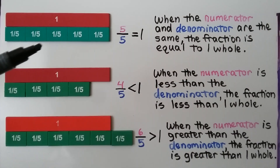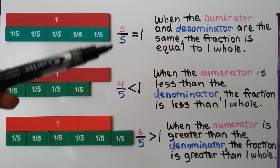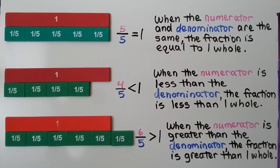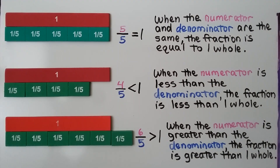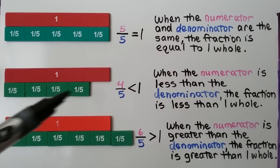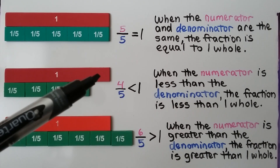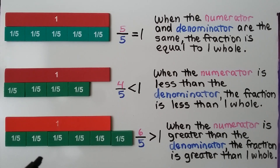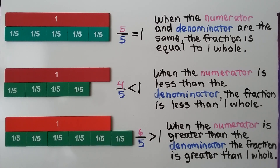When the numerator and denominator are the same, the fraction is equal to 1 whole — we have 5 fifths, that's equal to 1 whole. When the numerator is less than the denominator, the fraction is less than 1 whole. And when the numerator is greater than the denominator, the fraction is greater than 1 whole.